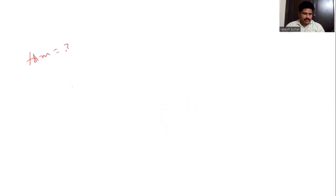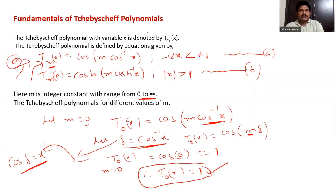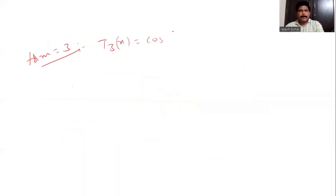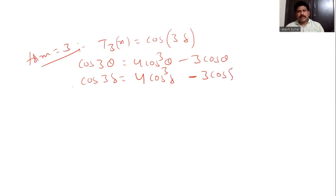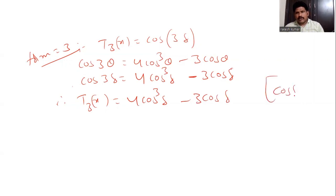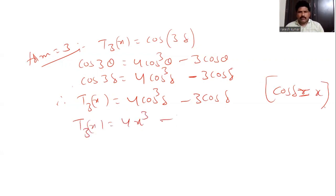Similarly for m = 3: T3(x) = cos(3δ). Using the formula cos(3θ) = 4cos³θ - 3cosθ, we get T3(x) = 4cos³δ - 3cosδ. Since cos(δ) = x, therefore T3(x) = 4x³ - 3x.